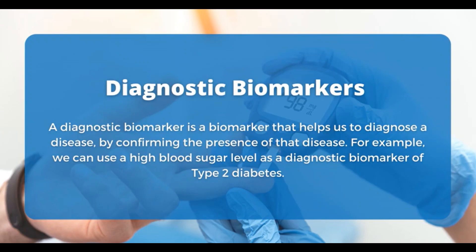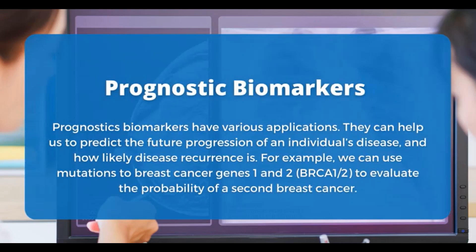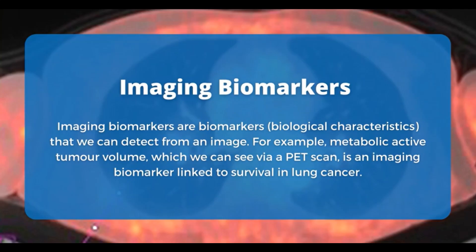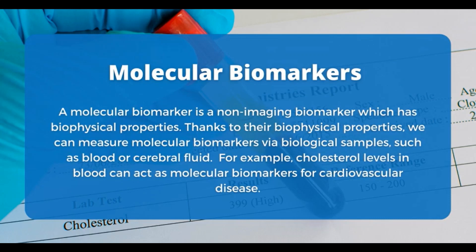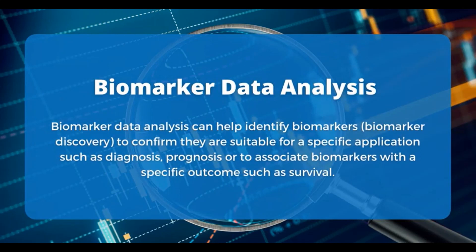Diagnostic biomarkers are used to confirm the presence of a particular disease — for example, high blood sugar is a diagnostic biomarker for type 2 diabetes. Prognostic biomarkers help predict the future progression of an individual's disease and the likelihood of reoccurrence; for instance, mutations in breast cancer genes BRCA1 or BRCA2 can evaluate the probability of a second breast cancer. Imaging biomarkers can be detected from an image, such as metabolically active tumor volume visible via PET scan. Molecular biomarkers are non-imaging biomarkers with biophysical properties measurable in biological samples such as blood or cerebrospinal fluid — for example, cholesterol level as a molecular biomarker for cardiovascular disease.